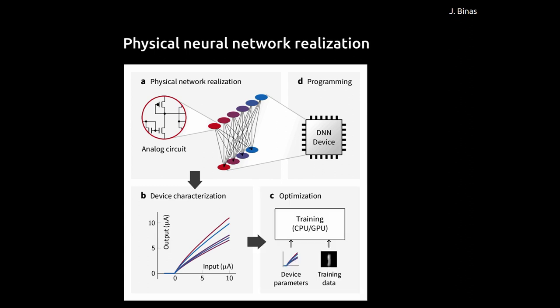The good news is that in a neural network, this doesn't really matter. Since we are optimizing the system for a particular task through a training procedure, we can simply take into account these measured device characteristics and use them as constraints in the optimization procedure. Rather than using a homogeneous neuron representation as a model during training, we can use individual transfer characteristics, or apply this to the weighting as well. By doing so, we obtain a set of parameters for a particular device that has been measured, and in that way we can still implement the desired functionality on this device.